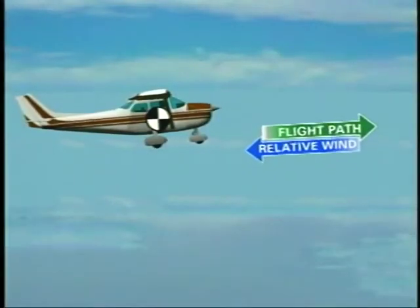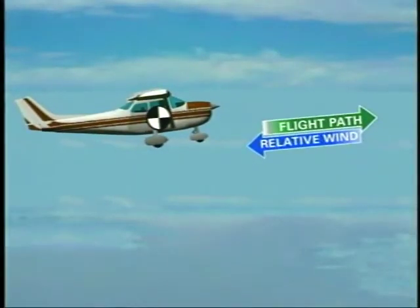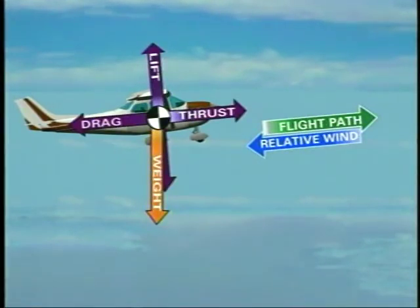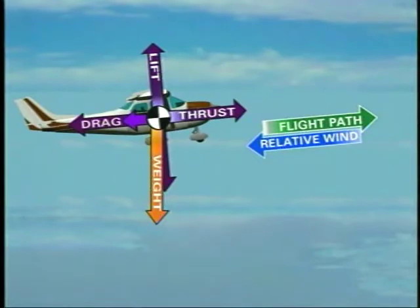When pitch is increased and the flight path is inclined, the force of weight is divided into two components. One component of weight opposes lift, 90 degrees to the flight path, and another component acts in the same direction as drag, opposing thrust.